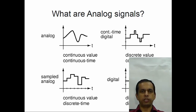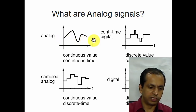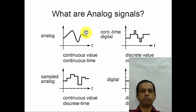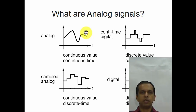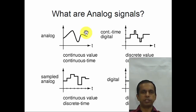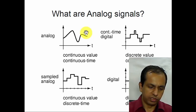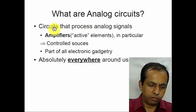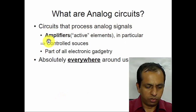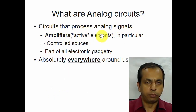For instance, if you have circuits made of resistors, capacitors, and inductors, they will of course process analog signals. The output of an RC, RLC, or purely resistive circuit will also be continuous valued and defined for continuous time if the input is continuous time. So that definition is useless. What do we really mean by analog circuits? They do process analog signals, but what we really mean are amplifiers — that is, active elements.